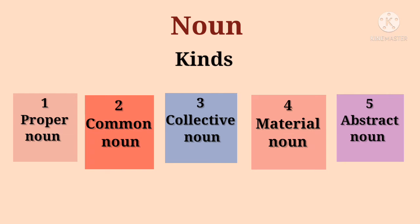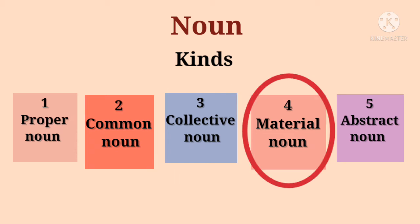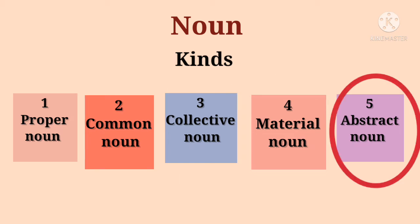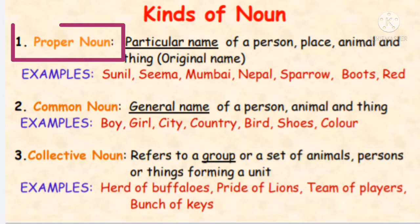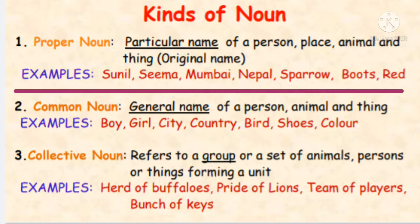Nouns are of five different kinds: Proper noun, Common noun, Collective noun, Material noun and Abstract noun. A proper noun is the particular or original name of a person, place, animal or thing. Examples: Sunil, Seema, Mumbai, Nepal, Sparrow, Boots, Red — these are the original names of persons, places, animals or things.